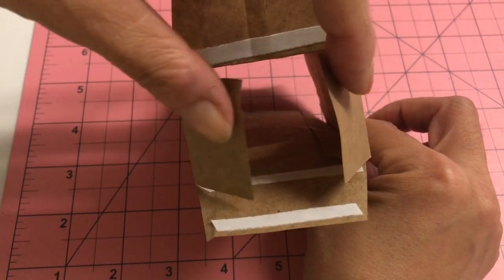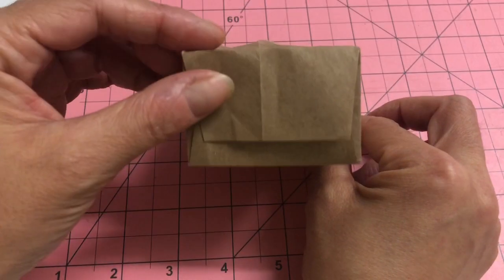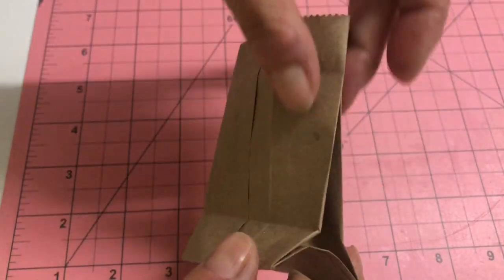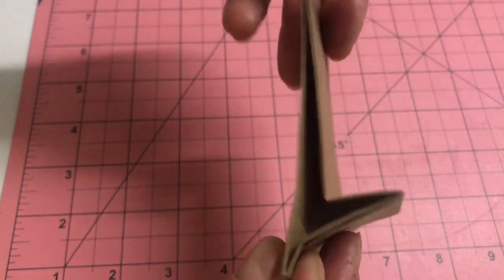Following this, fold in the two shorter tabs, then seal the bottom closed with the two larger flats. Carefully coax the bag to fold flat by pressing the sides inwards and flattening the bottom upwards.